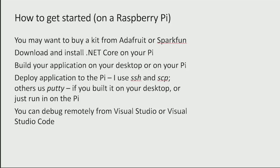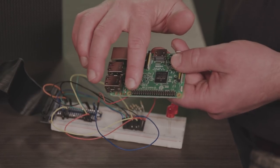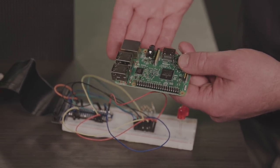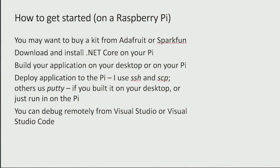How do you get started? We're talking about Raspberry Pi, but you can use other devices as well. The best place to start is buying a kit from Adafruit or SparkFun — there are other vendors for this hardware too. Download and install .NET Core on your Pi. You can install the SDK and do development directly on the Pi, or just install the runtime. In terms of building your application, you can build it on your desktop or laptop and then deploy it to the Pi using tools like SSH and SCP, or PuTTY. You can also just build and run the application directly on the Pi.